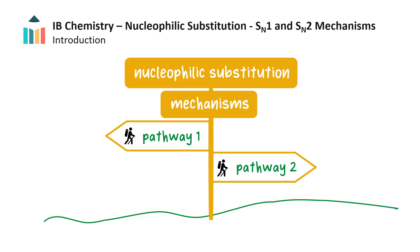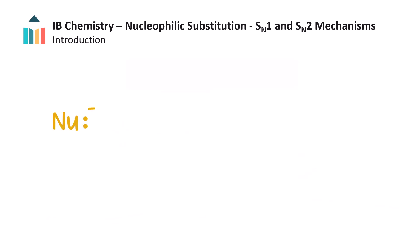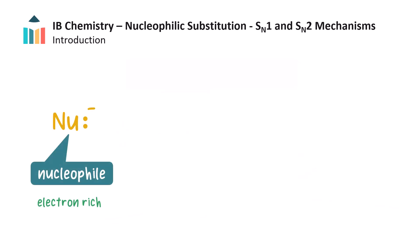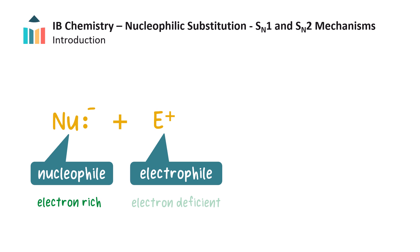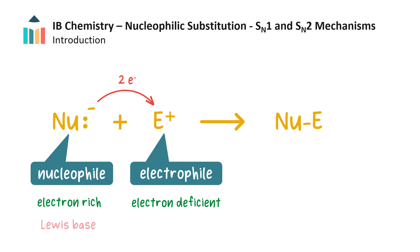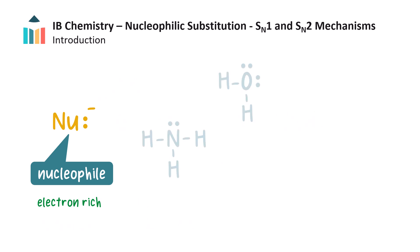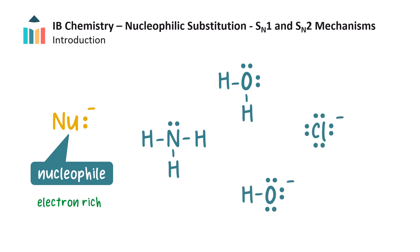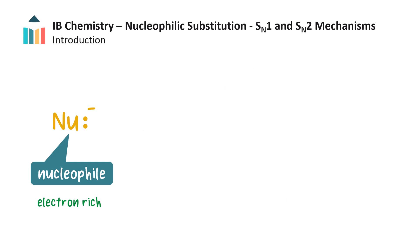But first, let's recap some groundwork. We know that nucleophiles are reactant species which are electron rich and that they are electrostatically attracted to electrophiles, which are positively charged or electron deficient. A nucleophile donates a pair of electrons to the electrophile and a bond is formed. The nucleophile acts as a Lewis base since it is an electron pair donor, and the electrophile as a Lewis acid since it accepts the electron pair. Some nucleophiles are neutral but possess a lone pair which they donate, for example water and ammonia, while some are negatively charged such as the hydroxide ion and halide ions.